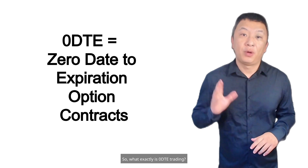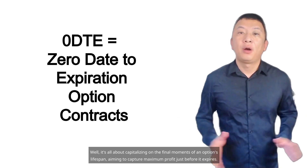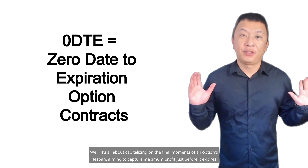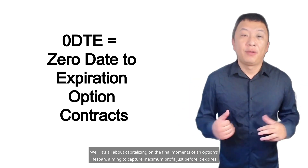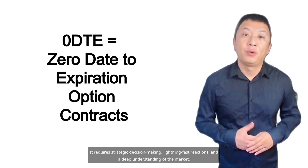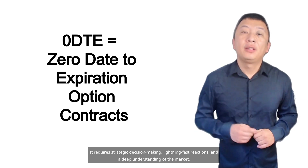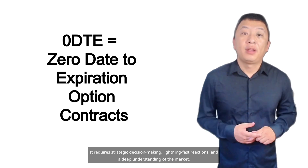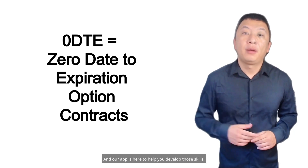So, what exactly is Zero DTE trading? Well, it's all about capitalizing on the final moments of an option's lifespan, aiming to capture maximum profit just before it expires. It requires strategic decision-making, lightning-fast reactions, and a deep understanding of the market — and our app is here to help you develop those skills.